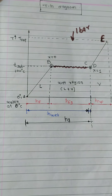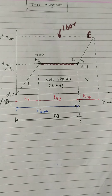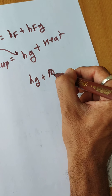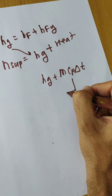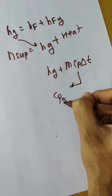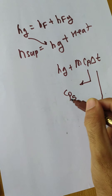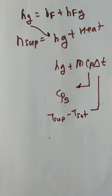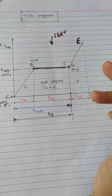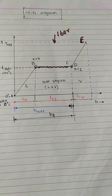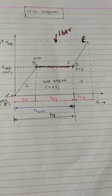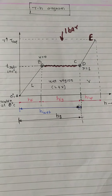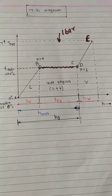For D to E, it is simply sensible heat, calculated as HG plus M·CP·ΔT. For calculating superheated steam, CP is the specific heat of superheated steam — CPS. And ΔT is T-sup minus T-sat — superheated temperature minus saturation temperature. So the formula is HG plus M·CPS·(T-sup minus T-sat), where M is 1 kg.